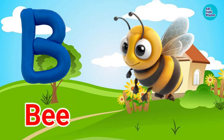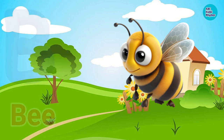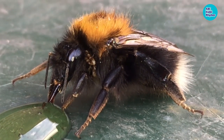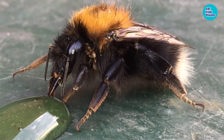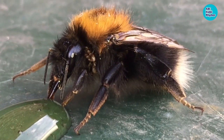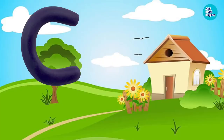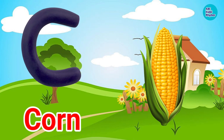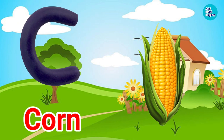B. B for Bee. Bee means Madhu Makhi. C. C for Corn. Corn means Makkah.